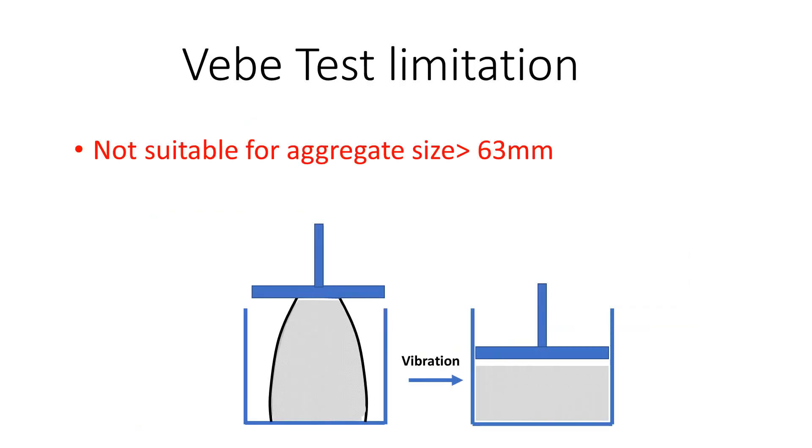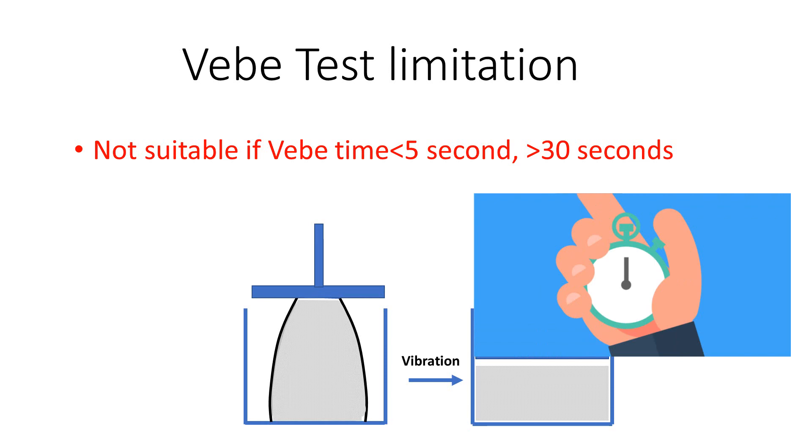The VEB test is not suitable for concrete with maximum size aggregate greater than 63 millimeters. Also, if the value of VEB time is less than 5 seconds and more than 30 seconds.